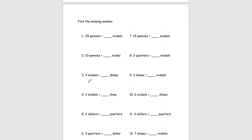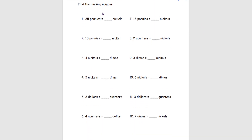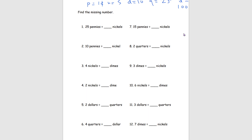For this next page we are finding the missing number using coins. Our coin distribution: 1 penny equals 1 cent, a nickel equals 5 cents, a dime equals 10 cents, a quarter equals 25 cents, and a dollar equals 100 cents. Looking at number 1, we have 25 pennies, which is 25 cents, equal to blank nickels. Since a nickel is 5 cents, we do 25 divided by 5, which is 5. So 25 pennies equals 5 nickels.